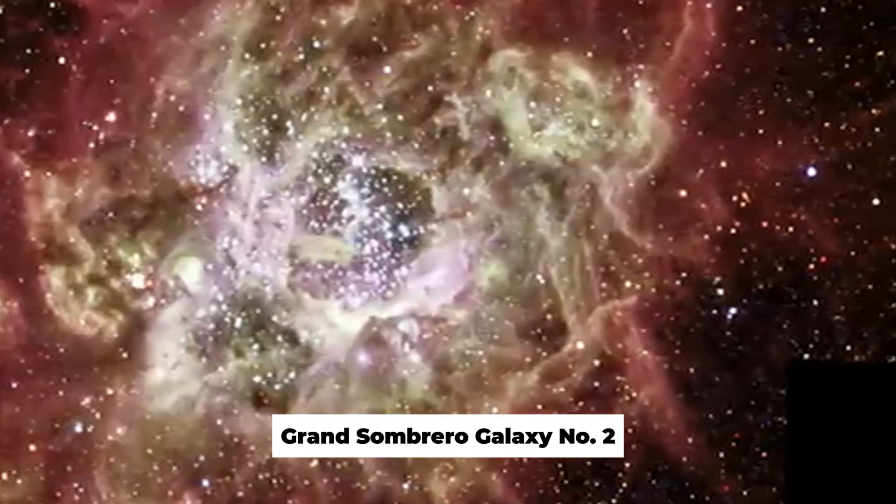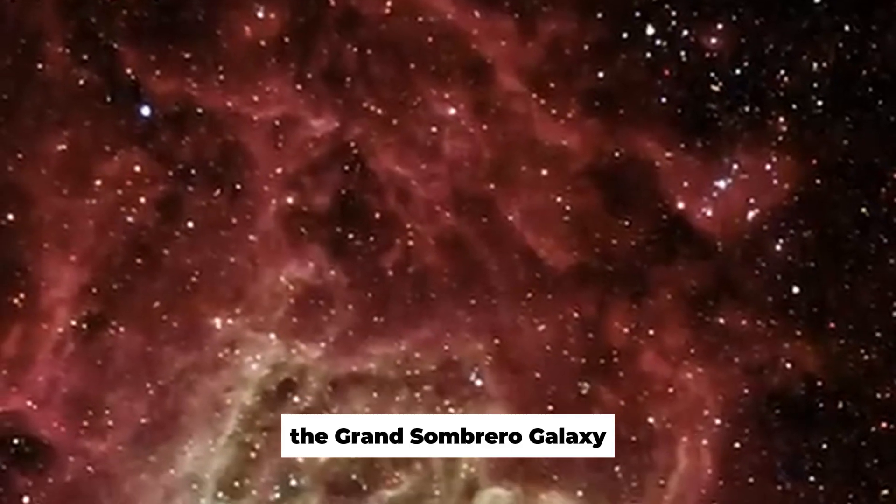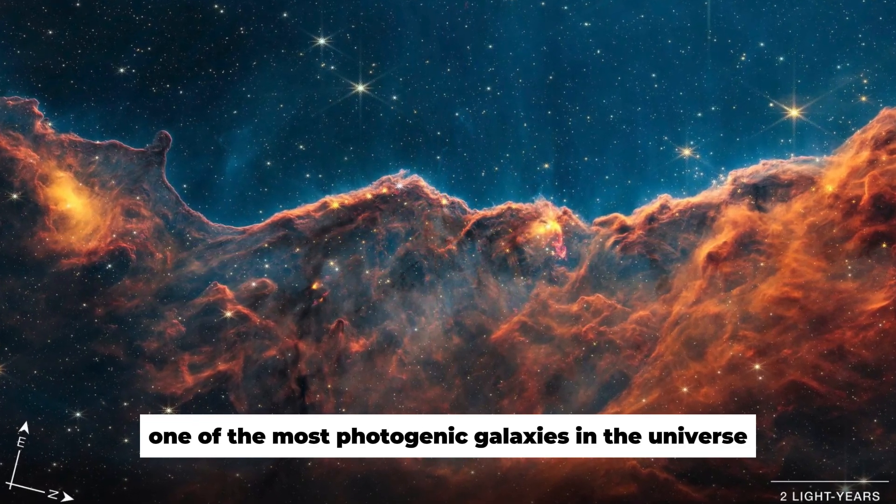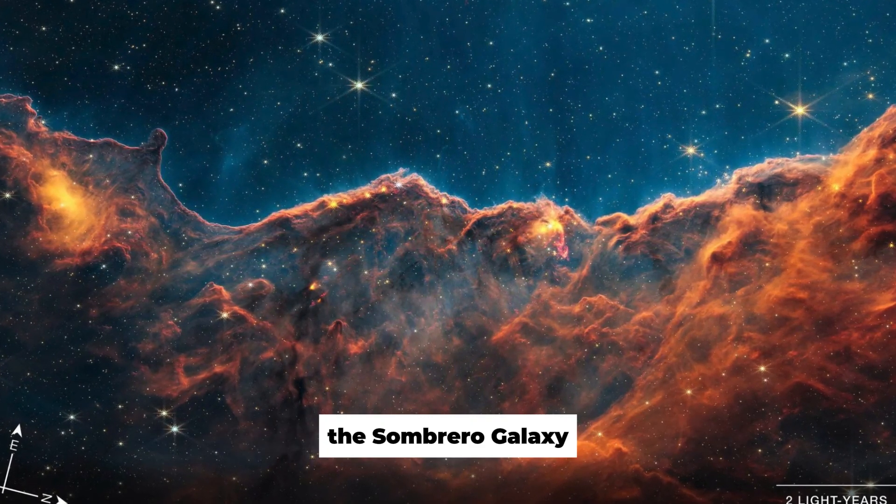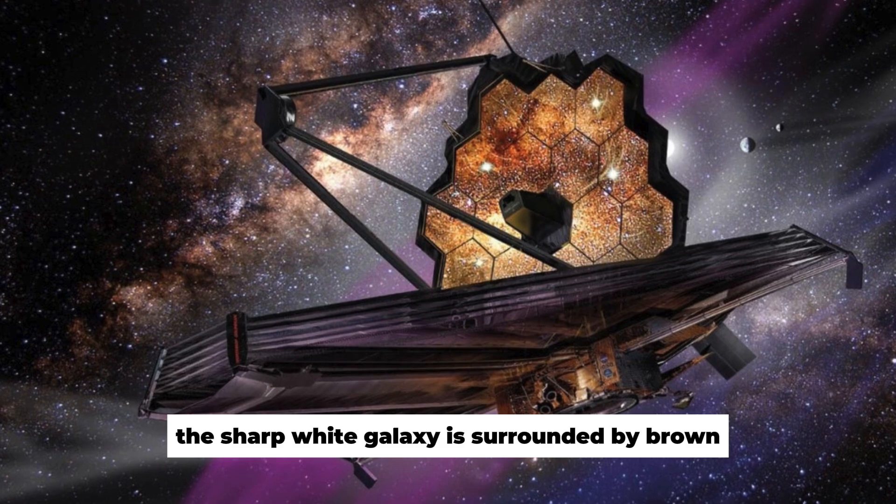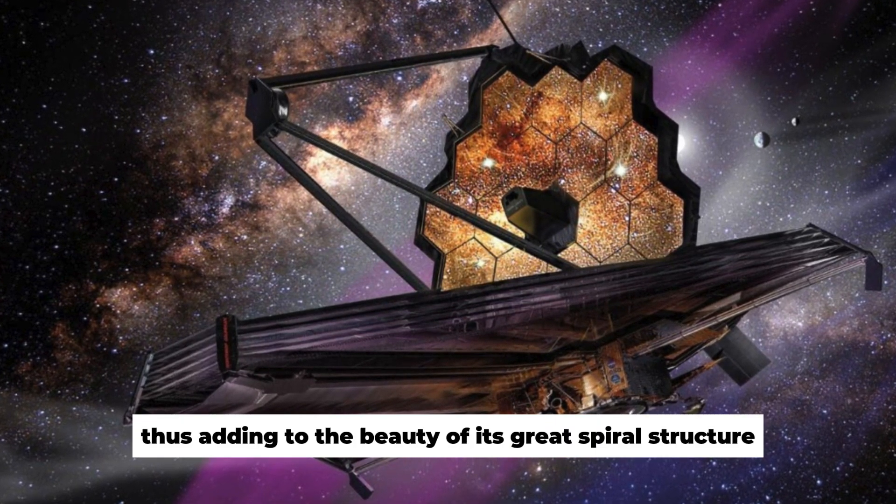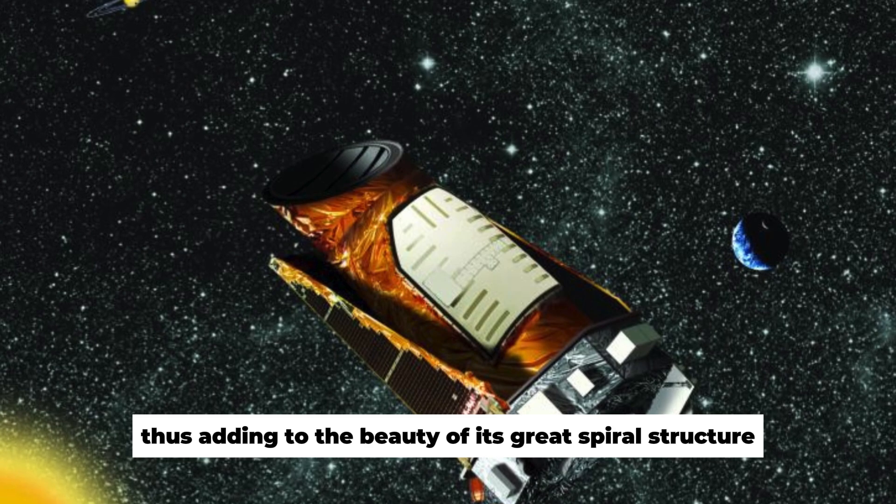Number 2: The Grand Sombrero Galaxy. This picture features one of the most photogenic galaxies in the universe, the Sombrero Galaxy. The sharp white galaxy is surrounded by brown dusty pathways, thus adding to the beauty of its great spiral structure.